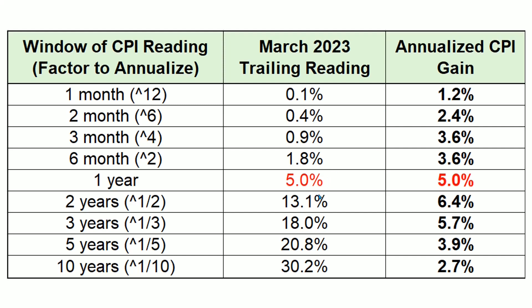For time windows longer than one year, we do the same type of exponential calculation, except as a fraction: two years, you take the square root; five years, you take one-fifth; ten years, you take one-tenth. The 10-year compound annual growth rate is 2.7% because there was 30.2% total inflation over 10 years — so the annual average is 2.7%. The five-year, three-year, and two-year windows follow accordingly.